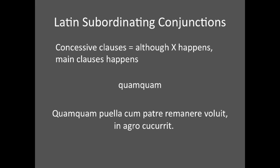There are also concessive clauses that are introduced by quamquam. A concessive clause explains that even though one thing is happening, the action of the main clause still happens. For example, quamquam puella cum patre remanere voluit, in agro cucurrit — 'Although the girl wished to remain with her father, she ran in the field.'